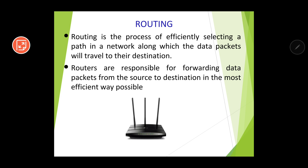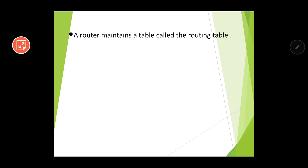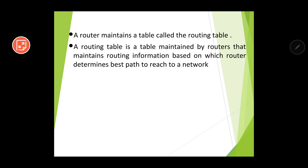A router manages the best path using a table called the routing table. A routing table is a table maintained by routers that stores routing information, based on which the router determines the best path to reach a network. The best path to reach a particular node is recorded in this table, and the entire route is selected based on it.